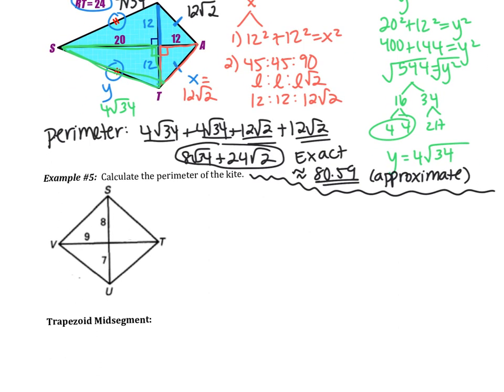Example five is another kite problem — calculate the perimeter. One thing we know about this kite is that one diagonal is bisected. Since SU is not bisected (its two pieces are different), VT must be bisected, so that small piece is 9. We also have right angles, so we'll need to use the Pythagorean theorem. Pause the video and try this one on your own. You'll need to do Pythagorean theorem to find two sides, remembering that you have two pairs of congruent sides.